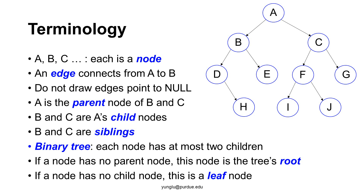Node A is the parent of both nodes B and C. B and C are called A's child nodes. More specifically, B is A's left child node and C is A's right child node. By convention, we call the nodes parents and children. We do not call them father node, mother node, son node, or daughter node. Since B and C have the same parent node A, B and C are called siblings.